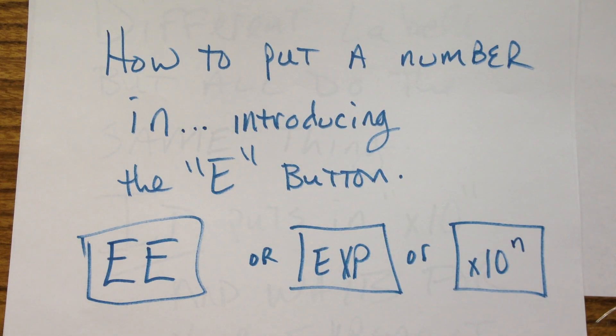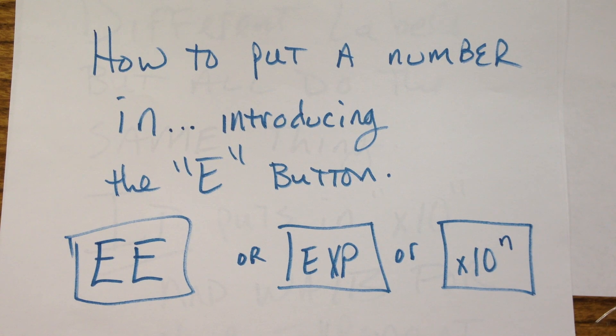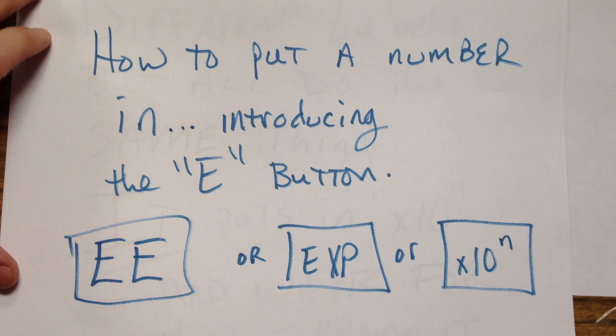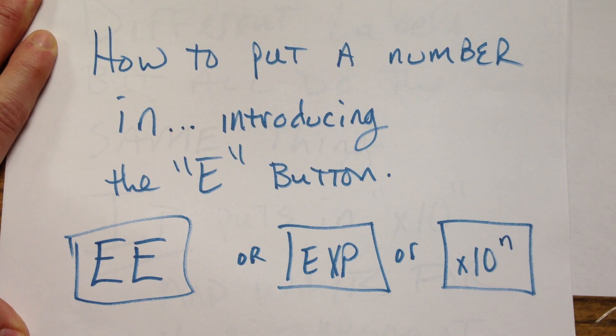So, how do you put a number in? Introducing the E button. Locate that button on your calculator. Oh, what's that? You don't have a calculator? Well, I told you to bring a calculator every day. Not my problem. You should really have one. If you don't have one, go buy one. You should have your own calculator every day because different calculators are going to look different. You're going to learn how to use one calculator. Then you're going to steal someone's other calculator and you won't know how to use it. It's really important that you learn how to do this on your calculator and always have that same calculator.